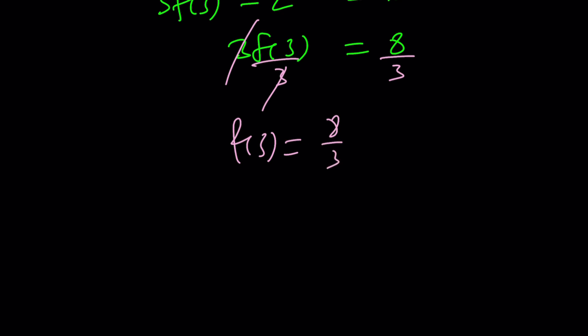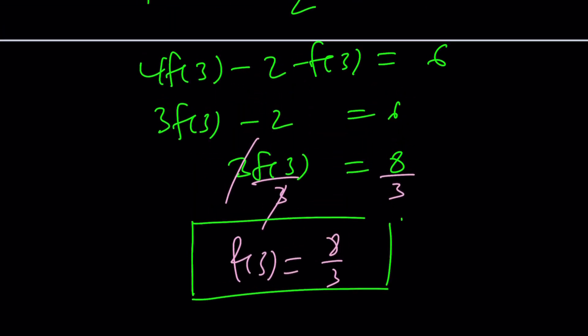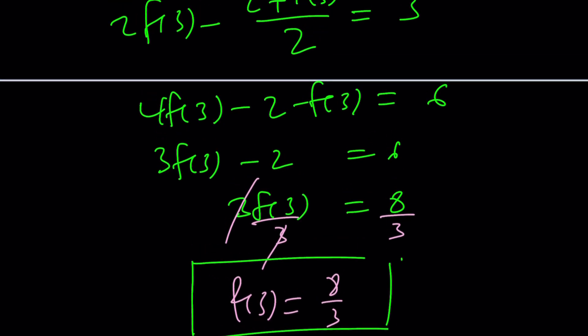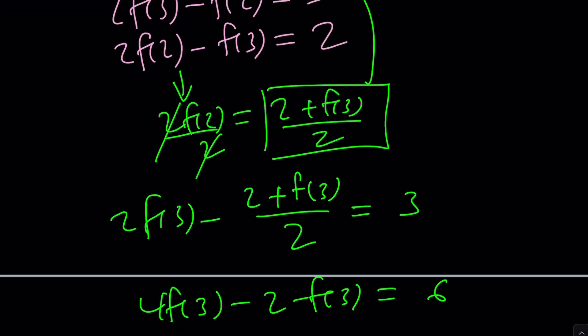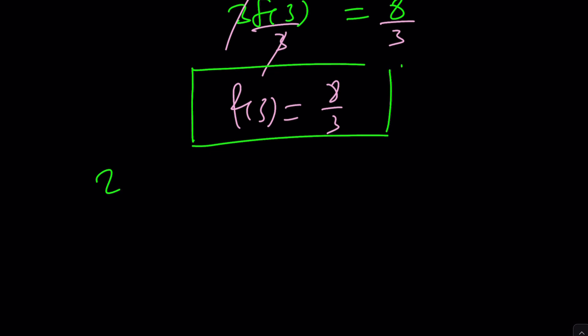So that's the value of the function at x equals 3. And that's what we were looking for. So we got the answer. We could also find f of 2 similarly. But let's go ahead, and before we get into some other stuff, let's go ahead and see how we can use the elimination method. And you're going to get to decide which method you like better.